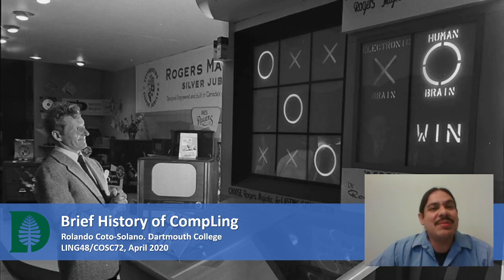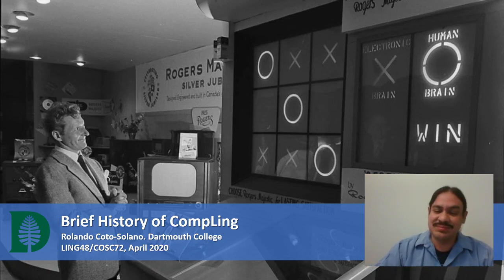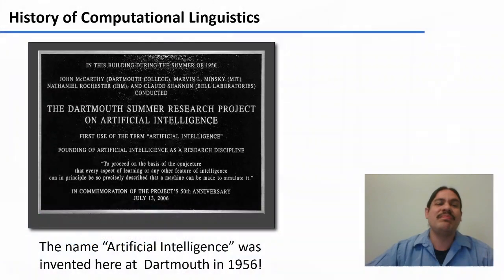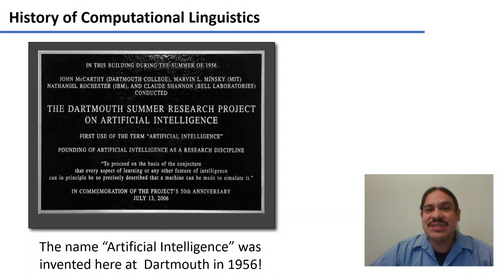Welcome back. We're going to talk about the history of computational linguistics, a field of research that has been active for at least 80 years. Fun fact: the term artificial intelligence was coined here at Dartmouth College.